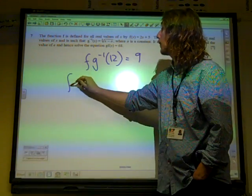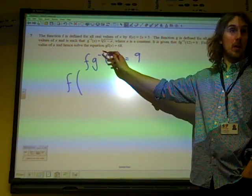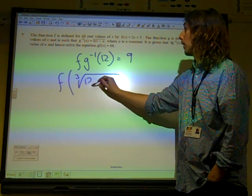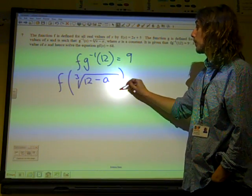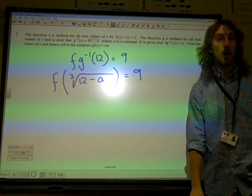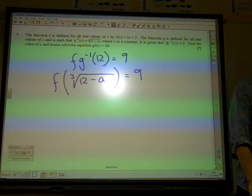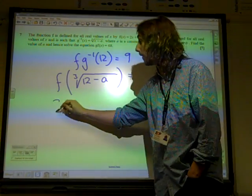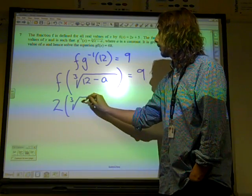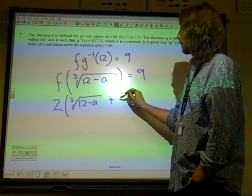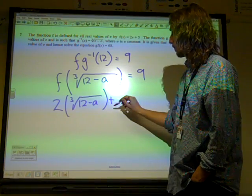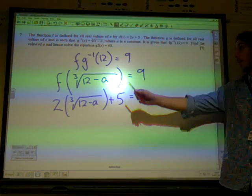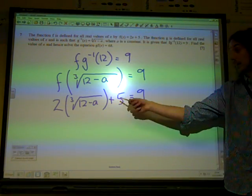That means f of, well, the inverse of g of 12 is the cube root of 12 minus a. So that's our input into the function f, and f is 2x plus 5, so that's 2(∛(12 - a)) + 5 = 9. So there's my equation. That's what that statement that we were given leads us logically to.